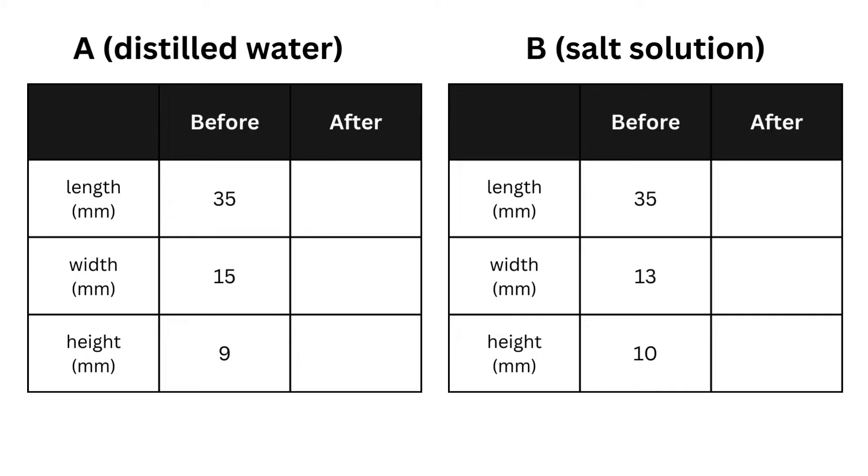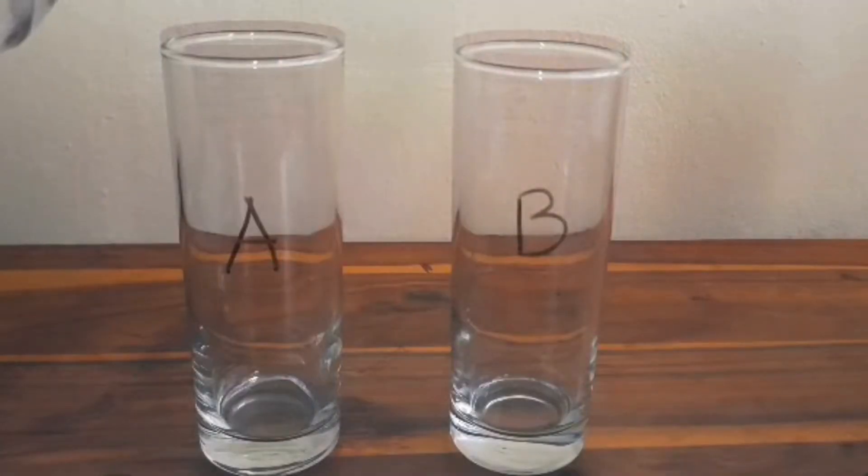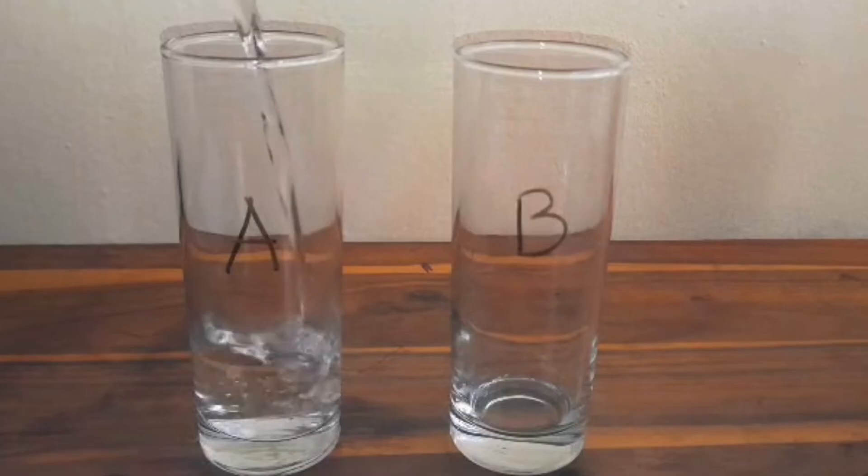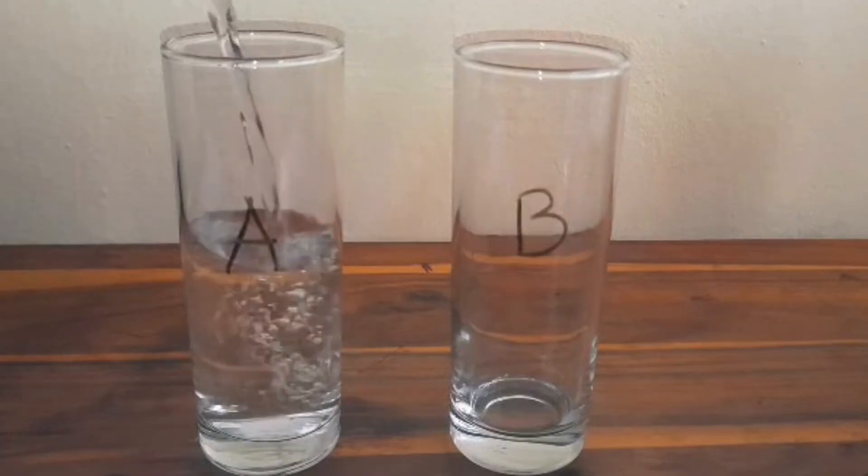We'll label the glasses as A and B and add water to both glasses. Then we add salt to the glass labeled B and stir.